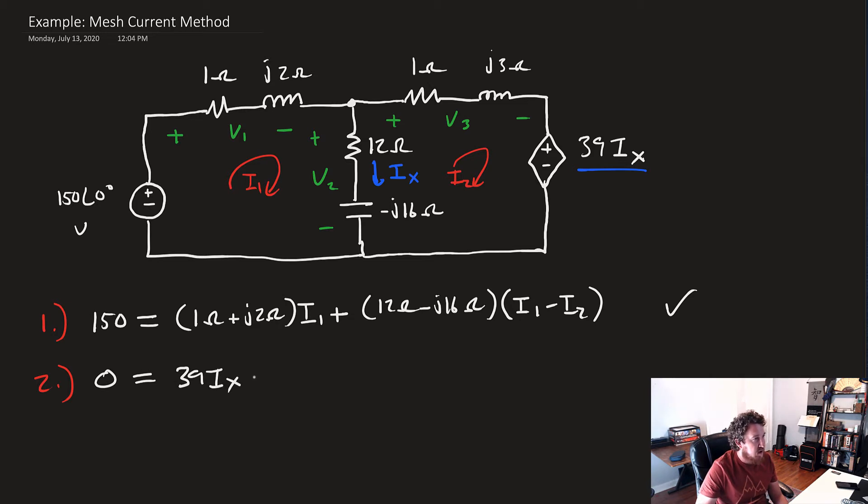And then we'll have plus, then it's the same impedance, 12-ohms minus j16-ohms, but now we're going in the opposite direction, so it's going to be I2 minus I1. Plus, now we're up here, and so we'll have 1-ohm plus j3-ohms times I2, and that's our second equation.